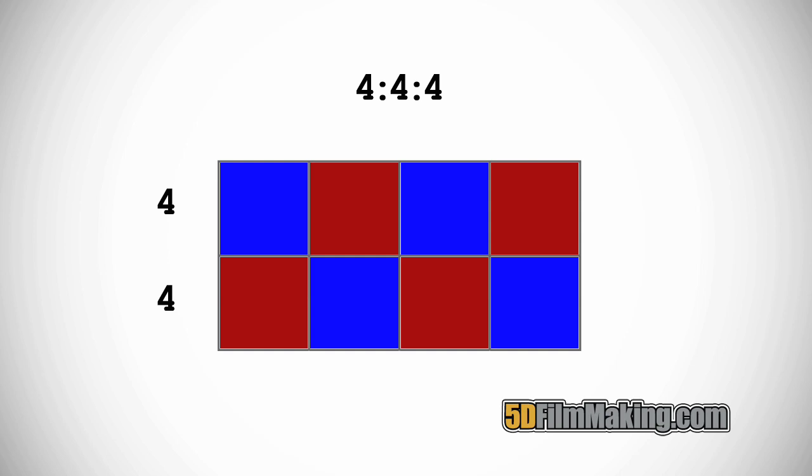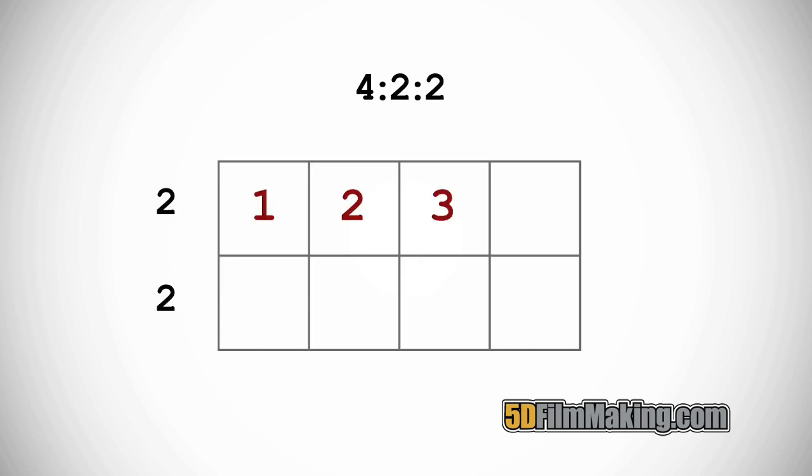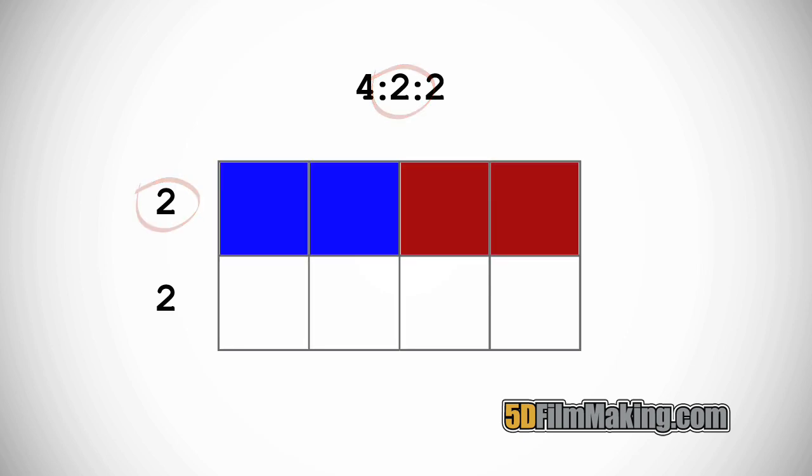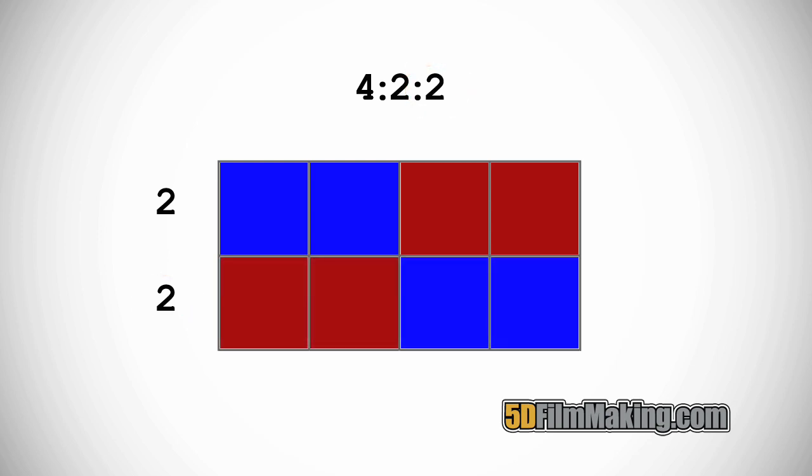Now let's take a look at 422. We're still dealing with a reference block that's 4 pixels wide. That hasn't changed. But now, every 2 pixels on the top row, the A row, have to share a chroma sample. And every 2 pixels on the bottom row, the B row, also have to share a chroma sample.